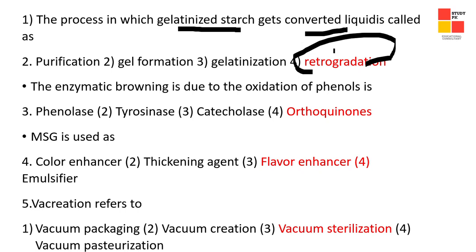Next: enzymatic browning is due to the oxidation of phenols — the right answer is ortho quinones. Next: MSG, monosodium glutamate, is used as a flavor enhancer.